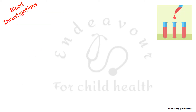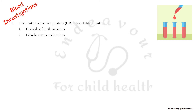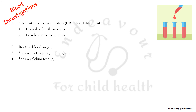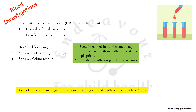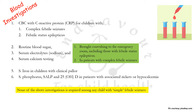Regarding blood investigations: complete blood count with C-reactive protein need not be done in all patients; it may be considered in children with complex febrile seizures or febrile status epilepticus. Routine blood sugar and serum electrolytes (sodium and calcium) are also not to be done routinely — they may be considered in patients brought convulsing to the emergency room, those with febrile status epilepticus, or complex febrile seizures. None of these is required in simple febrile seizures, except serum calcium sometimes in children less than one year. Serum iron can be done in children with clinical pallor; serum phosphorus, alkaline phosphatase, and 25-hydroxy vitamin D in patients with associated rickets or hypocalcemia.